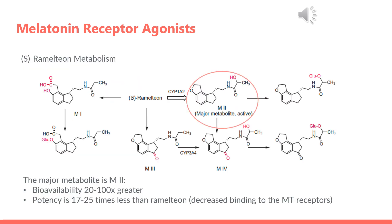Ramelteon has many metabolites when metabolized. The major one is labeled as M2 and is circled in red, as can be seen in the figure. It has a much higher bioavailability, but its potency is greatly decreased as compared to ramelteon, and so it doesn't have as much affinity to the MT receptors.